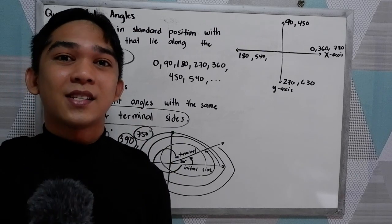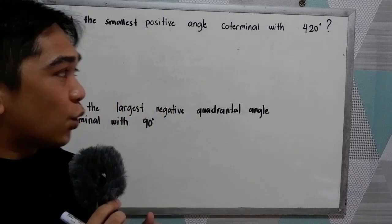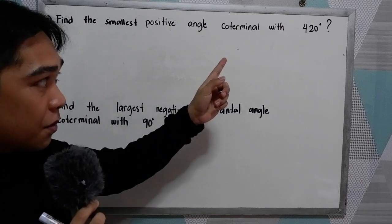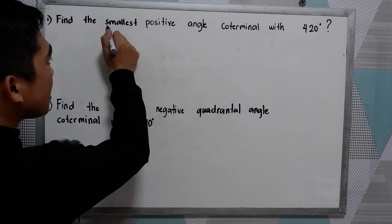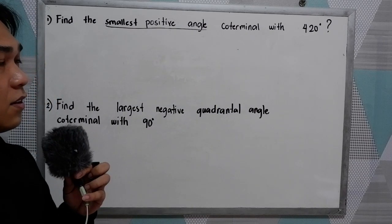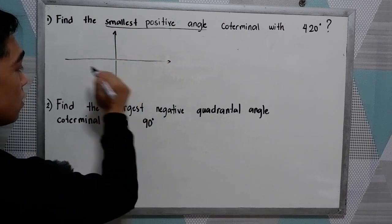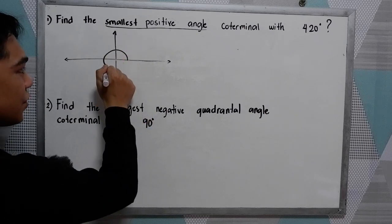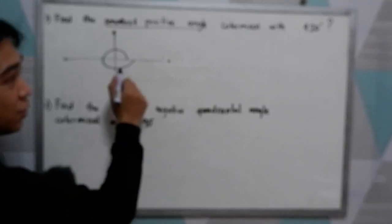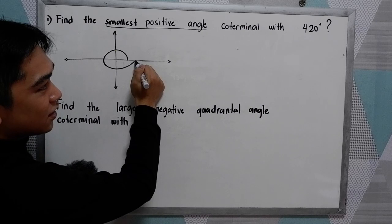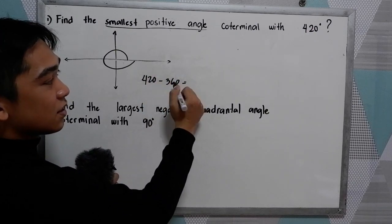Now we're going to answer some exercises regarding these basic terms in trigonometry. Number one: find the smallest positive angle coterminal with 420. Take note we need to find the smallest positive angle. First, locate 420. We have one revolution, that is 360, so 420 minus 360 gives us 60.